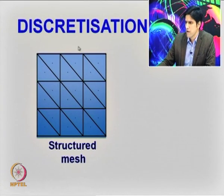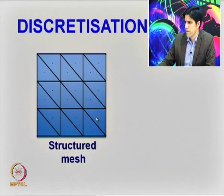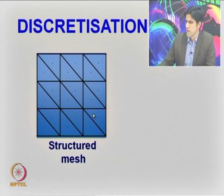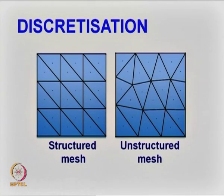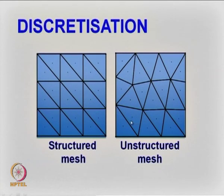I call it structured because there is a certain pattern in which these elements are individually placed. But one of the beauties of the conformal method is to go for an unstructured mesh — it can have small triangles, big triangles, and so on. This is the kind of discretization we are going to talk about: particularly unstructured mesh.